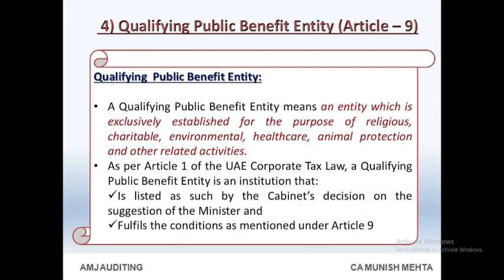Qualifying Public Benefit Entity — Article 9. A qualifying public benefit entity means an entity which is exclusively established for the purpose of religious, charitable, environmental, health care, animal protection, and other related activities. As per Article 1 of the UAE corporate tax law, a qualifying public benefit entity is an institution that is listed as such by the Cabinet's decision on the suggestion of the minister and fulfills the conditions as mentioned under Article 9.